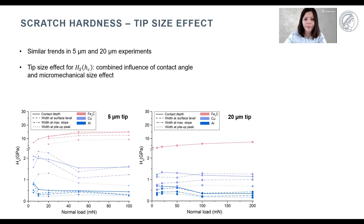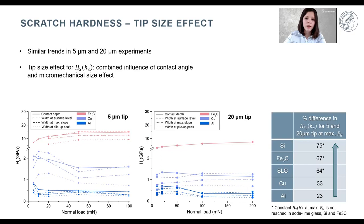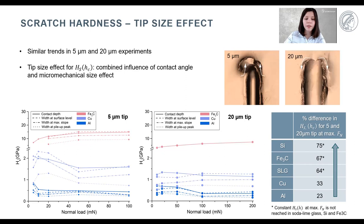When we compare the scratch hardness graphs for both sphero-conical tips used in this study, we see quite similar tendencies as discussed before. In addition, we also see a tip size effect: the tip with a smaller radius yields higher scratch hardness, and this effect gets stronger as the material's hardness increases. We presume the first reason for this tip size effect in scratching is the difference in contact angle between the tip and the surface. A larger contact angle for the smaller tip would lead to material being pushed upwards during scratching, while for the larger tip, the material flows forward and to the side of the indenter, which increases the contact area. Secondly, during scratching, the conventional micromechanical size effect can play a big role, especially in crystalline materials, where smaller areas result in larger plastic strain gradients and elevated geometrically necessary dislocations and hardening.